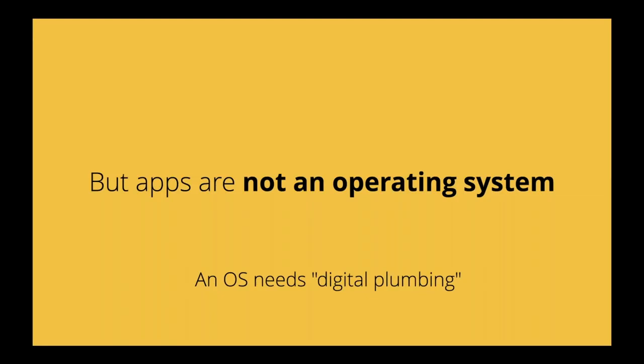It's important to remember that a bunch of individual applications don't make an operating system. An operating system needs digital plumbing. Think of it like a house — you don't just put up four walls and say you have a house. There's a foundation, electricity, plumbing, gas lines, sewage lines, furniture, decorations — any number of things that make it feel like a home. That's the important concept with Zoho One: there's a bunch of things being put into one really slick, sophisticated, and convenient package to power your organization.